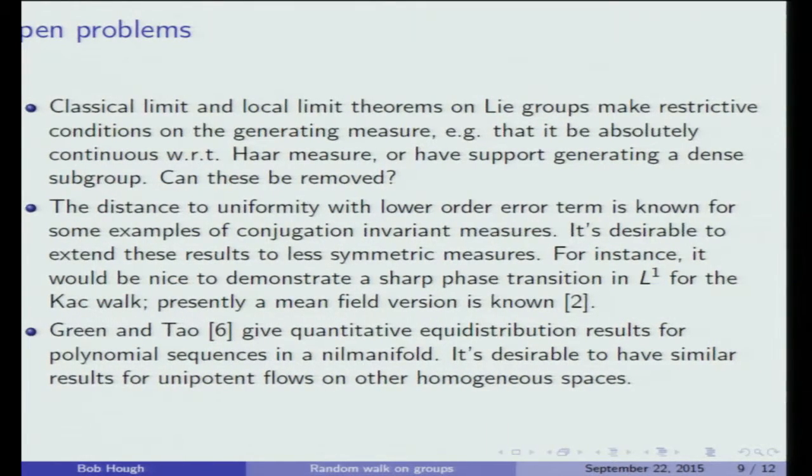Second problem: in the situation where the measure on your group is conjugation invariant, the theory tends to be somewhat similar to the abelian case. It actually just depends on the character theory of the group, or at least on the spectral side, it only depends on the character theory of the group. So we tend to know, in some cases, relatively sharp convergence results. But it would be nice to know similar results when the generating measure is less symmetric. The Kac walk is one case that I have in mind.